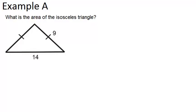In example A, it says what is the area of the isosceles triangle? Remember, isosceles triangle means two sides are congruent. We can see that two sides are marked as congruent, so this side over here must be 9. And we need to know that the area of any triangle is one-half times the base and the height.